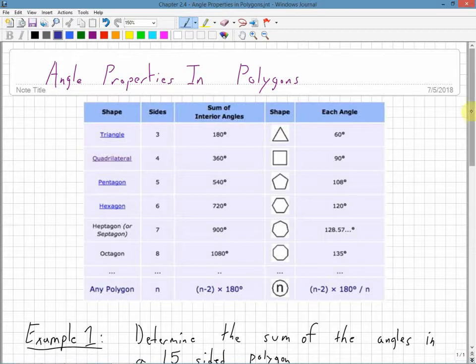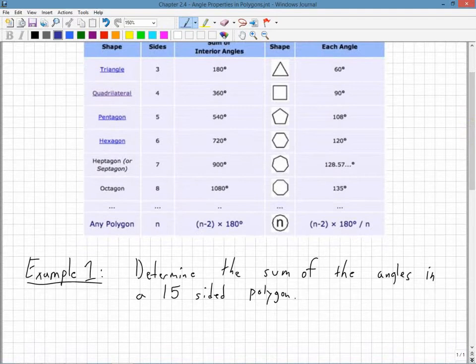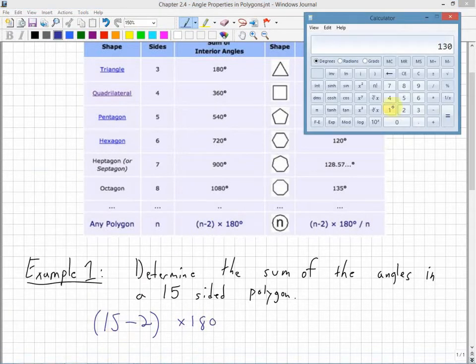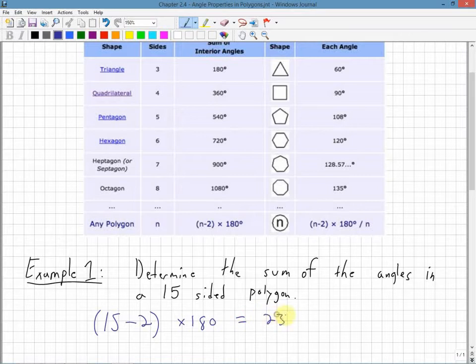So let's use this in an example. Determine the sum of the angles in a 15-sided polygon. So all I have to do is take 15, subtract off two, n minus two, and multiply that by 180. So I know 15 minus two is 13, take that and multiply it by 180, and I have a sum of 2340 degrees. That will be the sum, the addition of all the angles in that 15-sided polygon.